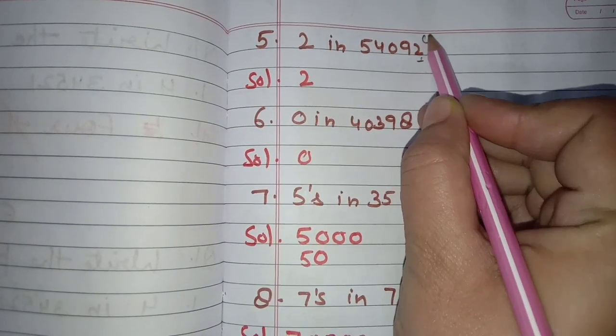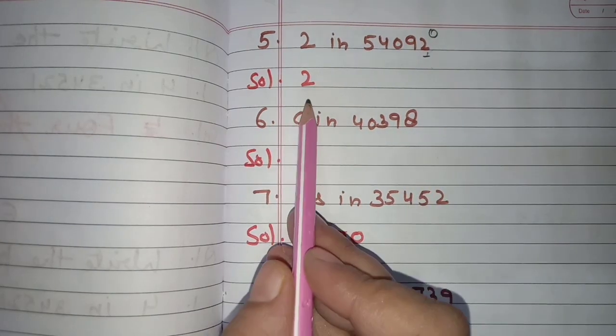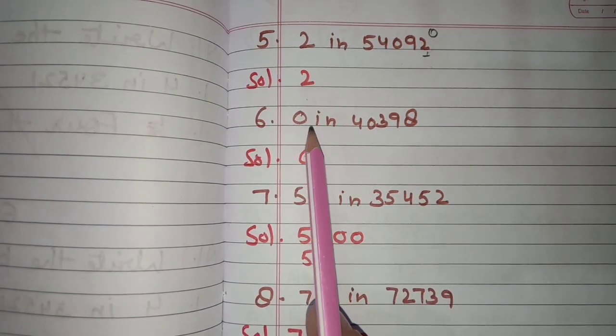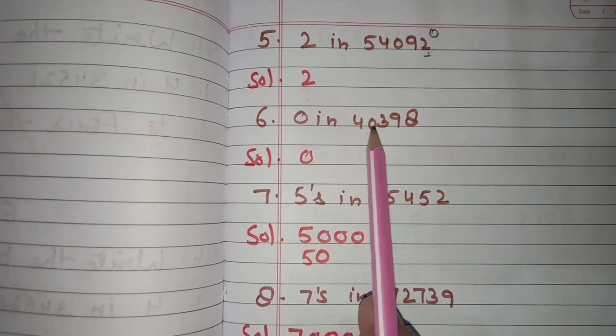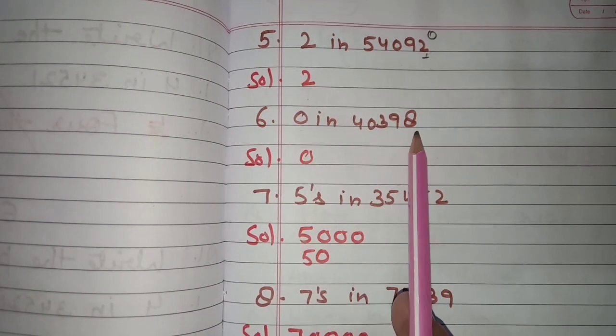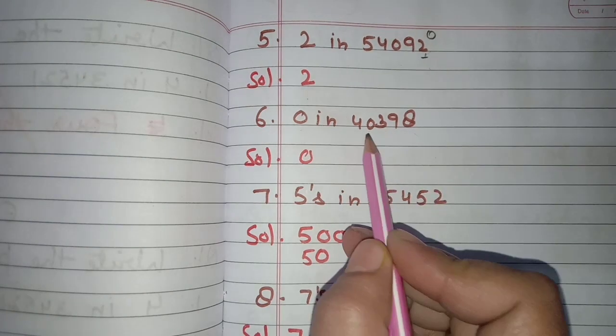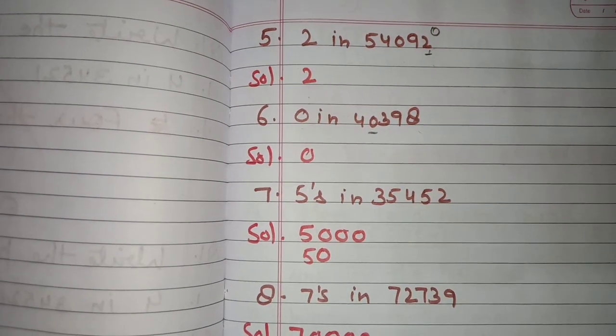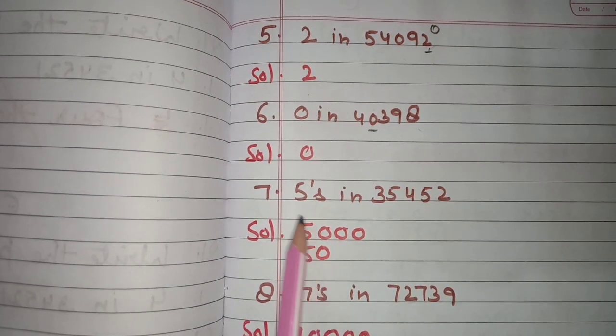Next: 0 in 40,398. Here the place value of zero is zero.